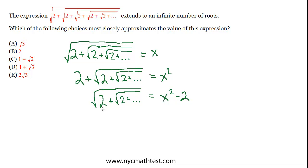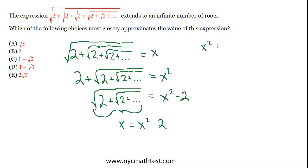Now if we look at the left side — square root of 2 plus square root of 2 plus dot dot dot going on infinitely — that's the same thing that we wanted to solve for. That's essentially equal to what we had at the very beginning. So we can make a substitution for this entire expression: it equals x. And now we have x equals x squared minus 2.